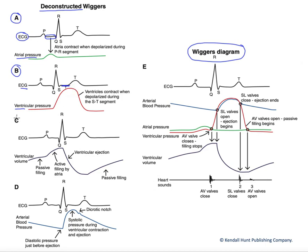Coming below that into C, we're looking at ventricular volume now. The ventricular volume trace really does tell us a lot about the cardiac cycle. We can see that during the TP segment, when the heart is entirely in diastole, we're passively filling the ventricles through venous return. Then the atria are stimulated to contract at P, and they contract during the PR segment — that gives us our active filling phase.